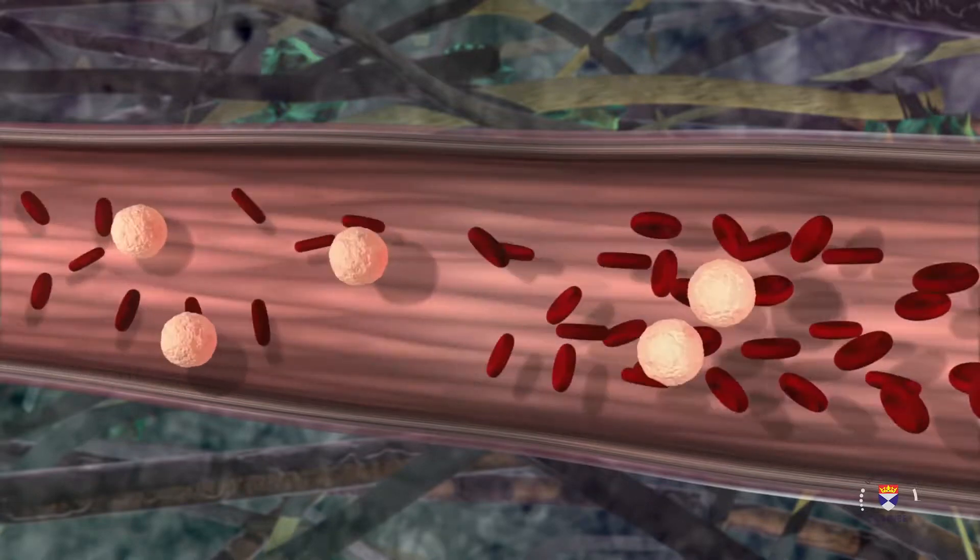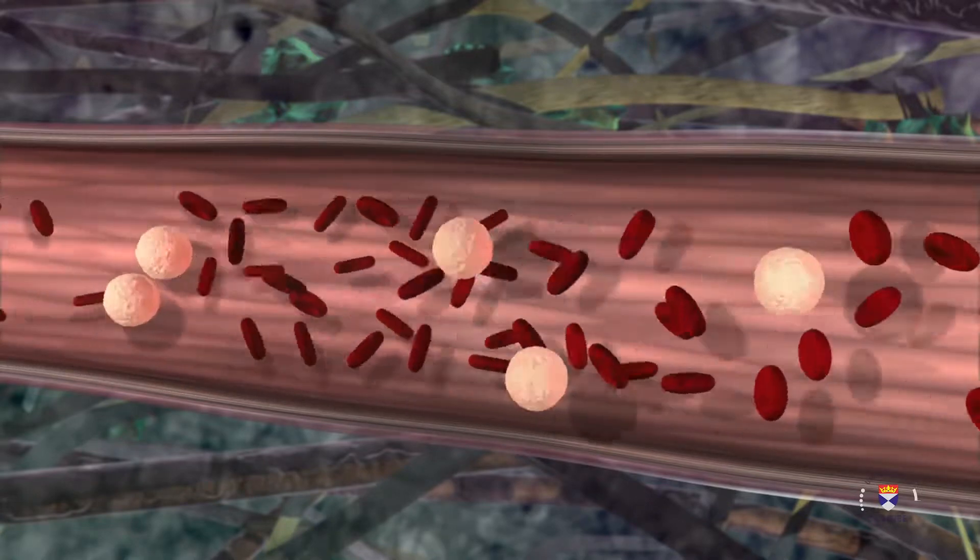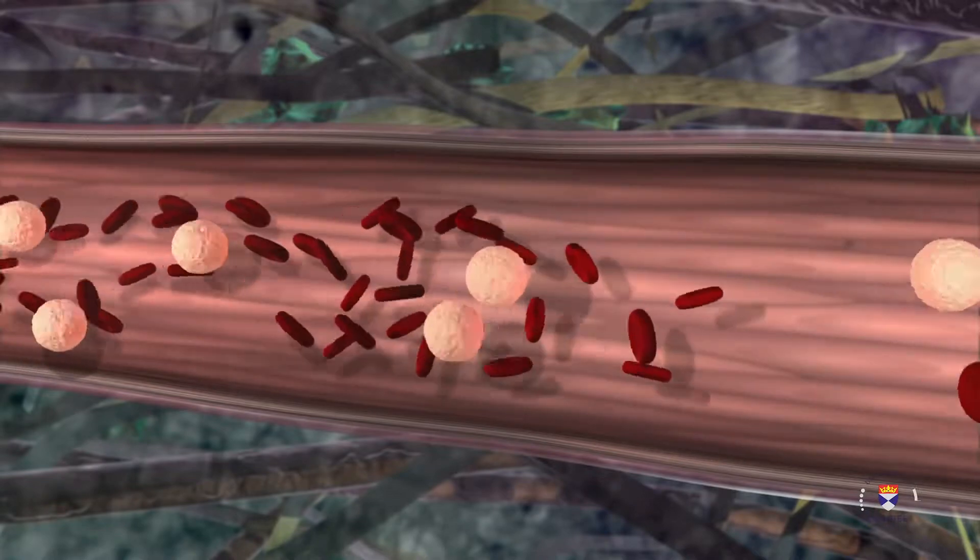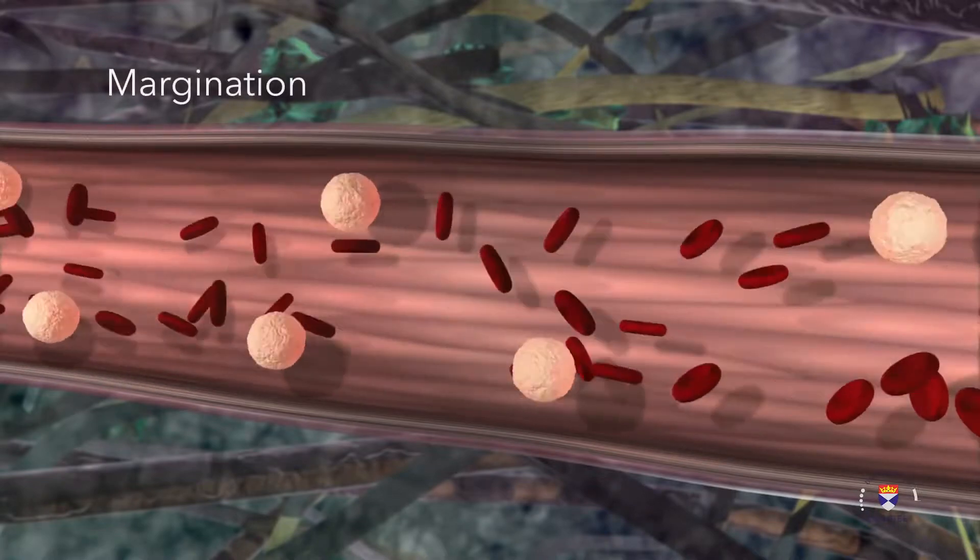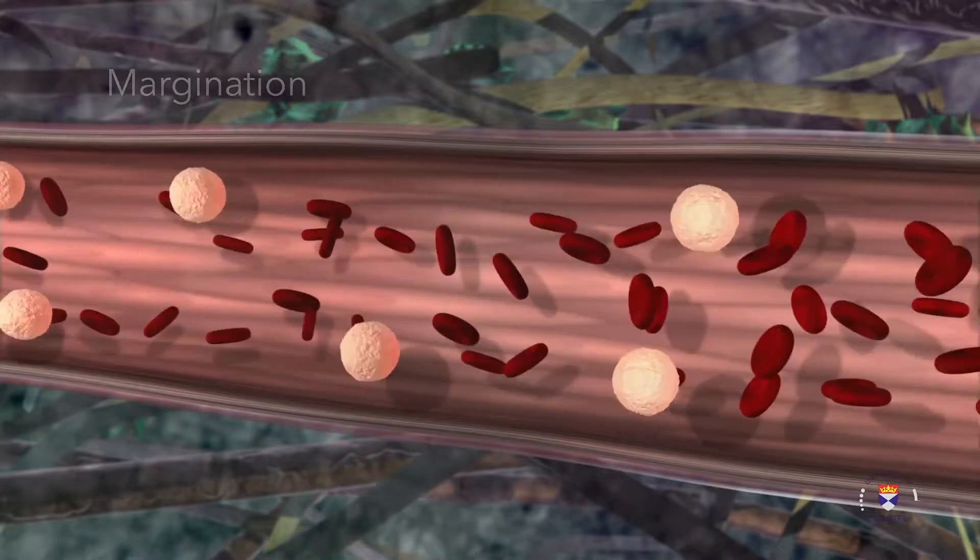Vasodilation causes the flow of blood to slow down and allows large white blood cells or leukocytes to move towards the walls of the vessel in a process called margination.